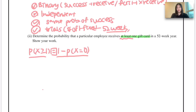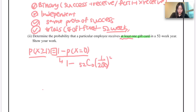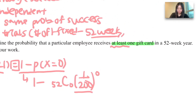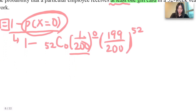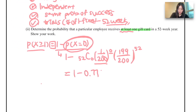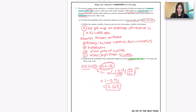This is equivalent: getting the probability of more than one card and subtracting from one the probability that you receive no cards will be the same. So the equation is 1 minus C(52,0) times (1/200)^0 times (199/200)^52. If you calculate this, it equals 1 minus 0.771, which equals 0.229. So this is the probability for a particular employee to receive at least one gift card in the 52-week year.